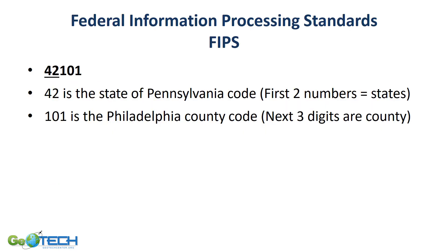There is something else to understand when examining census data: the Federal Information Processing Standards, or FIPS codes. This is a five-digit number where the first two digits are the state code — for Pennsylvania, that is 42 — and the next three digits are the county code. For example, 101 is Philadelphia County, making 42101 the FIPS code for Philadelphia County, Pennsylvania.